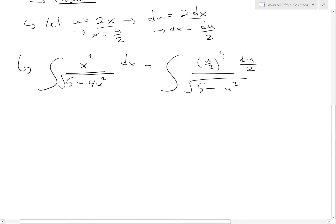Then we simplify this further. If we expand this, u divided by 2 becomes u squared times 1 over 4. This is 2 squared. Then we have du there and divide by 2, so this becomes 8.